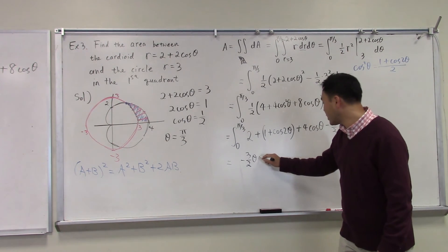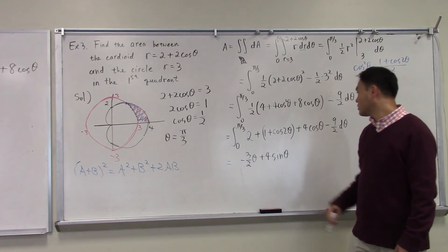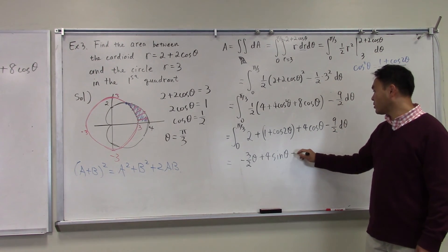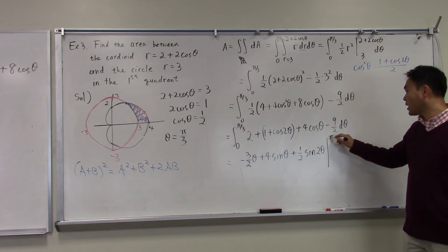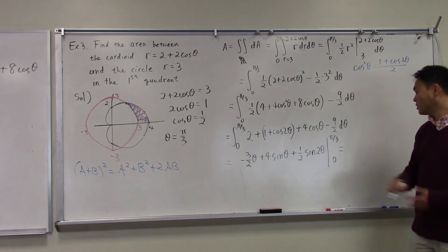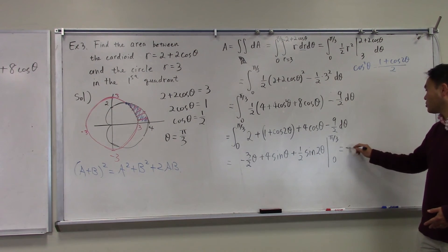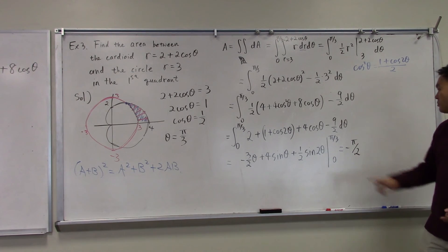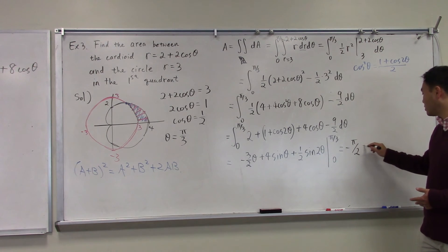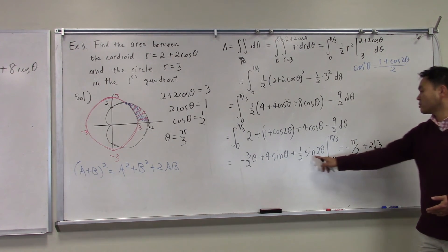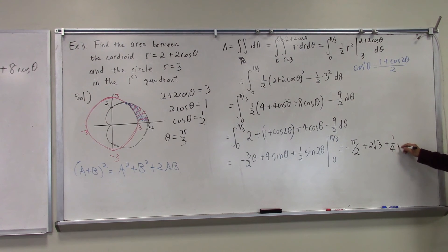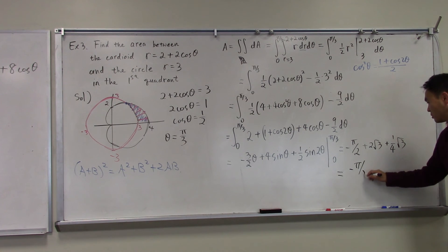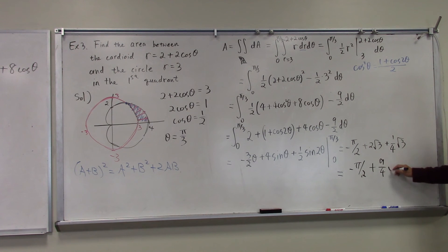If you integrate cosine two theta, you get one half sine two theta. And you have to plug in the end points, pi over three and zero. If you plug in pi over three, that gives you negative pi over two. If you plug in pi over three, sine pi over three is radical three over two, and times four, that's two radical three. Sine two pi over three is the same as radical three over two again, so it's plus one fourth radical three. And if you simplify this, you get negative pi over two plus nine over four radical three.